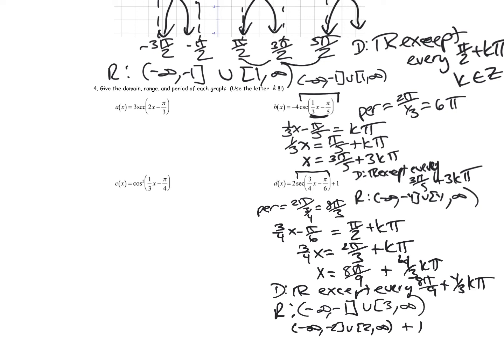For problem C, the notation with the little squared means I'm taking the cosine of one third x minus pi over four and squaring the ratio. That's what that means.